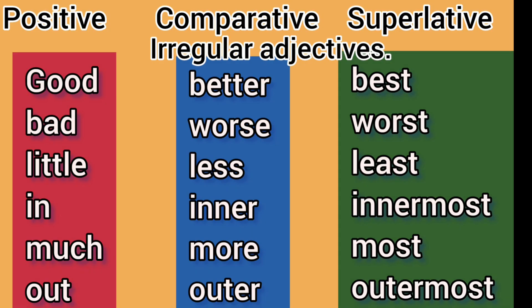Here are some irregular adjectives in positive, comparative and superlative degree. Good, better, best. Bad, worse, worst. Little, less, least.